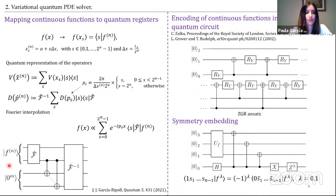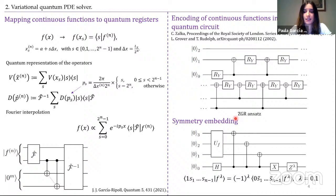The quantum circuit for Fourier interpolation first applies the quantum Fourier transform to the n-qubit solution, then adds interpolation points by appending quantum registers in momentum space, and finally applies the inverse Fourier transform to obtain the interpolated solution in position space. To encode the solution in a quantum circuit, we use what we call the ZGR ansatz, a variational quantum circuit based on the one proposed by Zalka, Grover, and Rudolph to encode non-negative probability distributions.